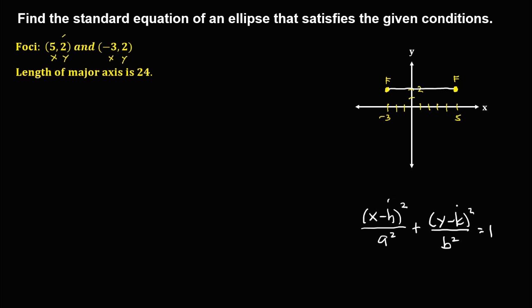Since the center is h and k, we need to locate the center of this ellipse first. The center is the midpoint of the foci, so we need to find the midpoint. First, we compute the distance between the two foci. Counting from one focus to the other, the distance between the two foci is equal to 8. Then to locate the midpoint, divide 8 by 2, which gives 4. So we need to count 4 units to find the center.